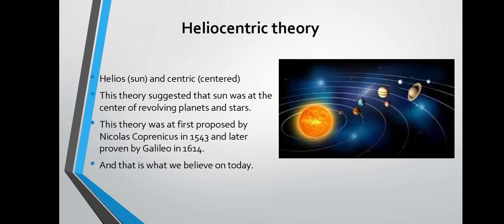Heliocentric theory: helios means sun and centric means center. This theory suggests that the sun is at the center, with all planets and stars revolving around it. This theory was first proposed by Nicholas Copernicus in 1543 and later proven by Galileo in 1614. This is what we believe today — the heliocentric theory is correct and the geocentric theory is not.